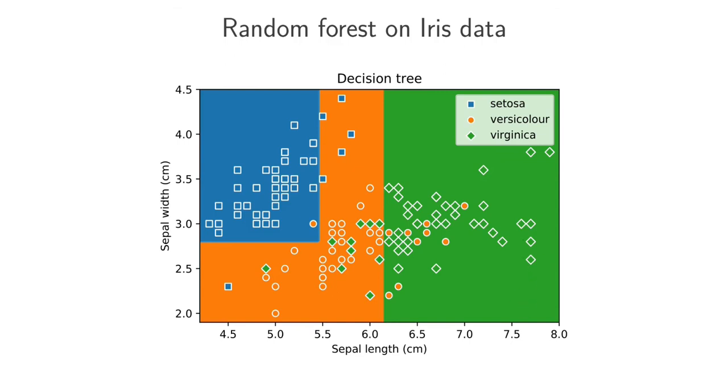This tree was specifically grown until we get four leaf nodes. We've got one leaf node corresponding to this region here, another leaf node corresponding to this region here, another leaf node corresponding to this region, and then a fourth leaf node corresponding to that region.